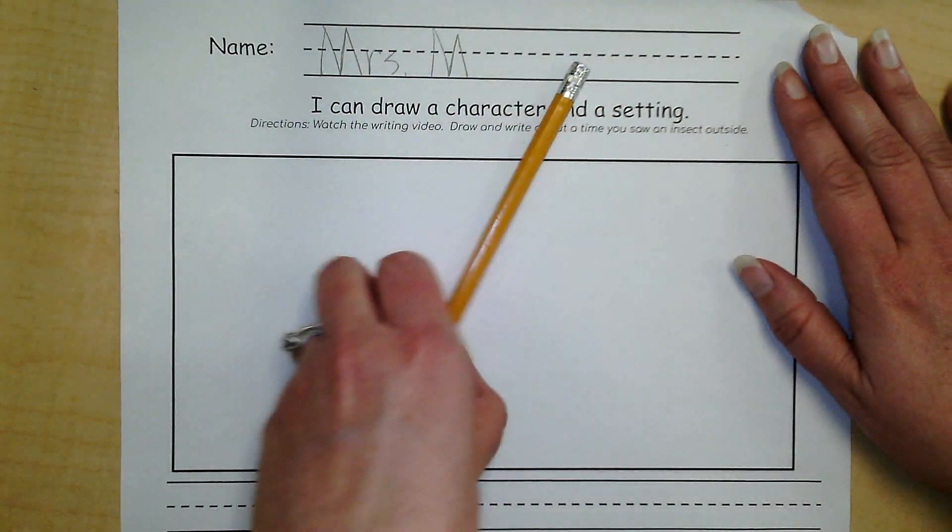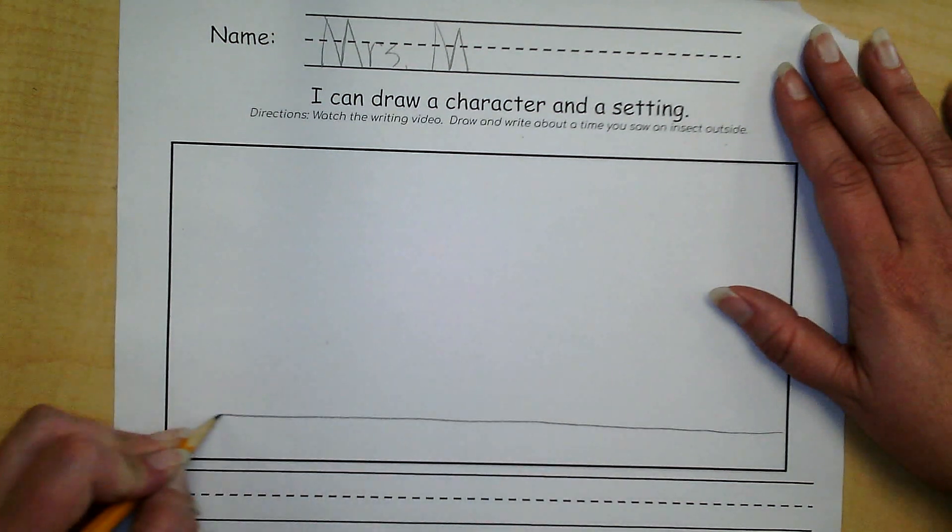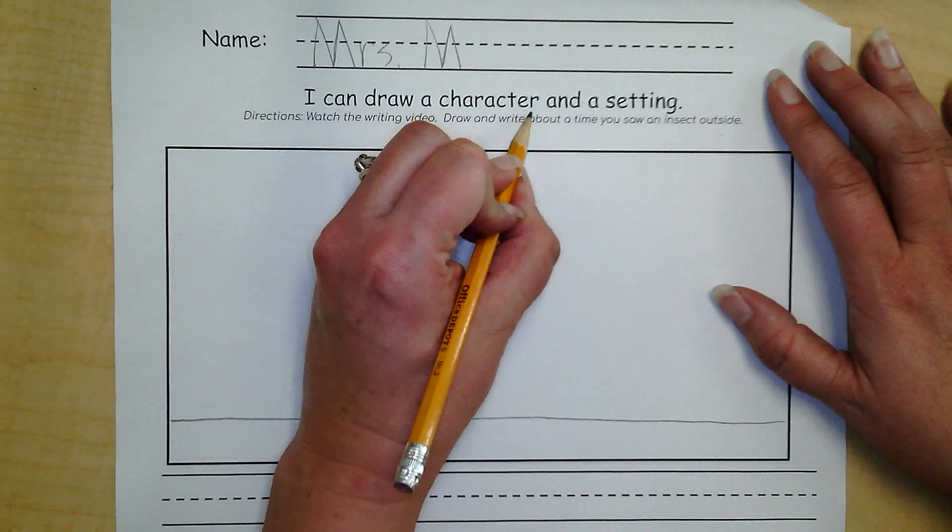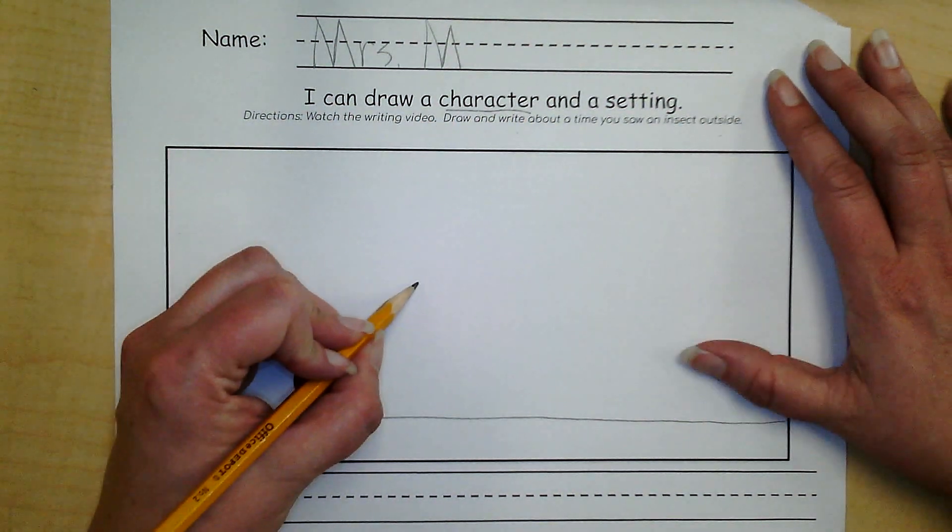Here I go. I'm going to start by drawing the ground. And who's in the story is me. I'm the character in the story. So I better draw myself. I was sitting down. So there's me sitting down. I was on the ground and you know what I was doing? I was eating a yummy sandwich. There's my sandwich. And here's me. I better draw my mouth open. I was eating a sandwich.